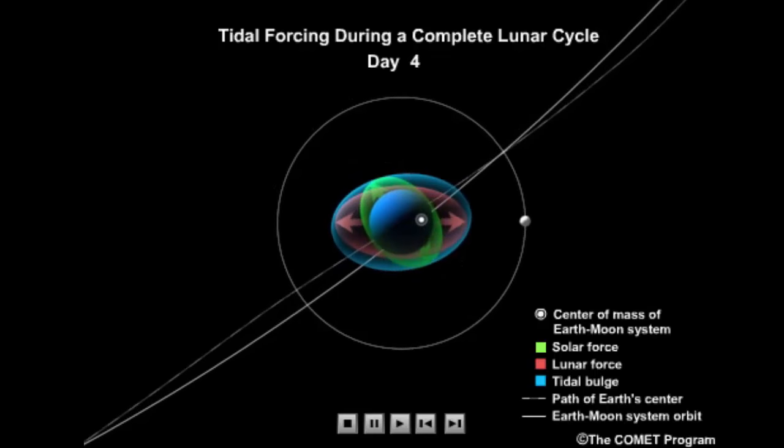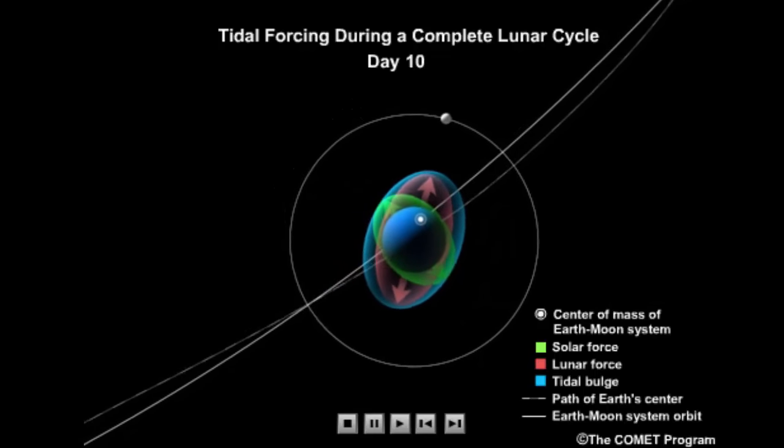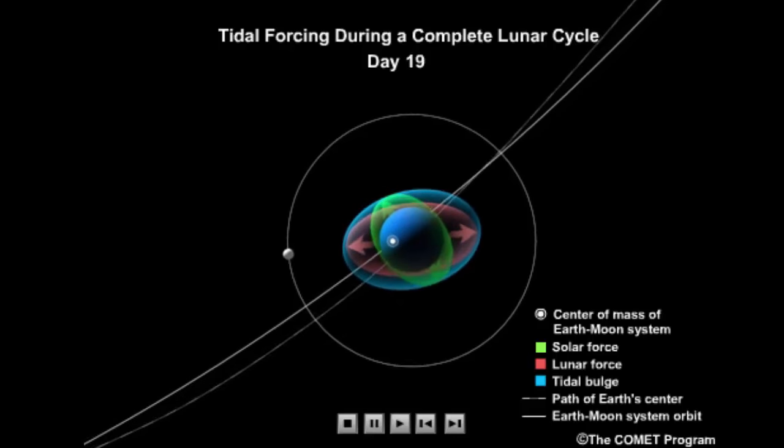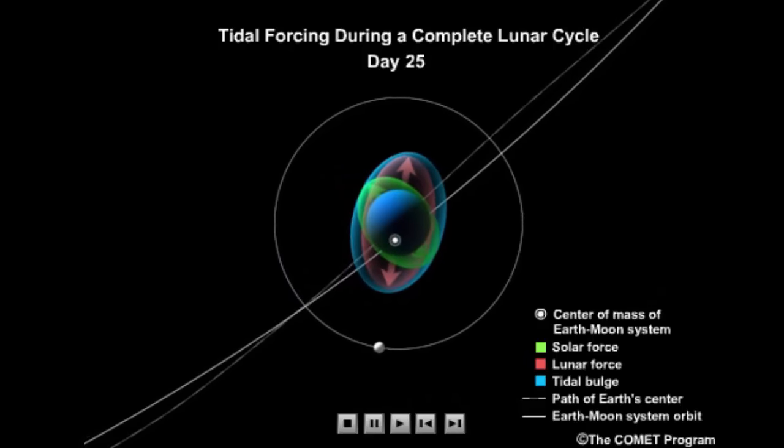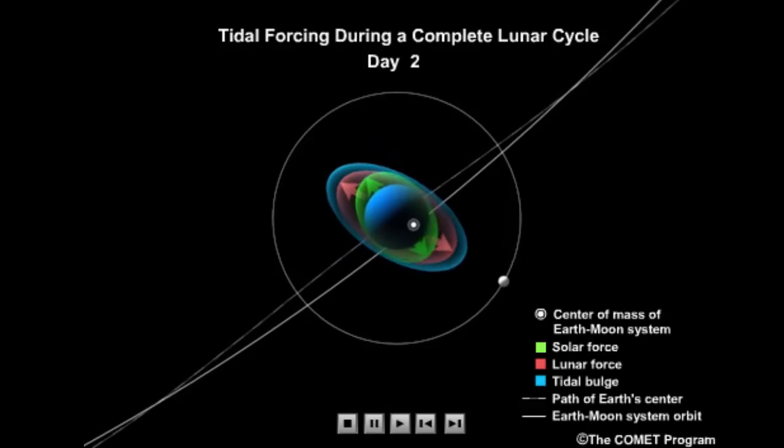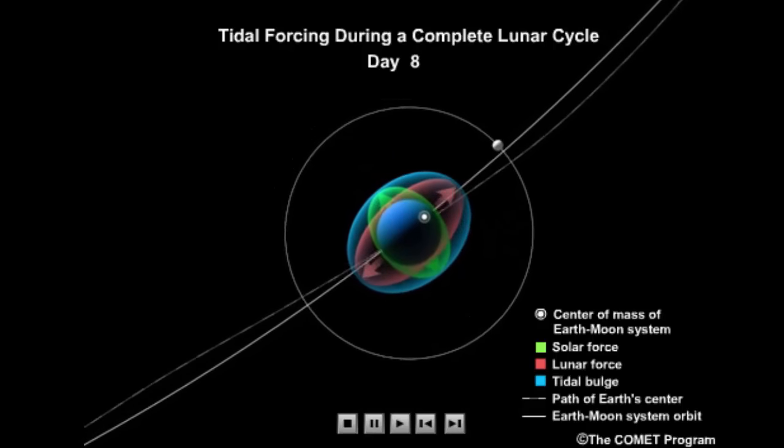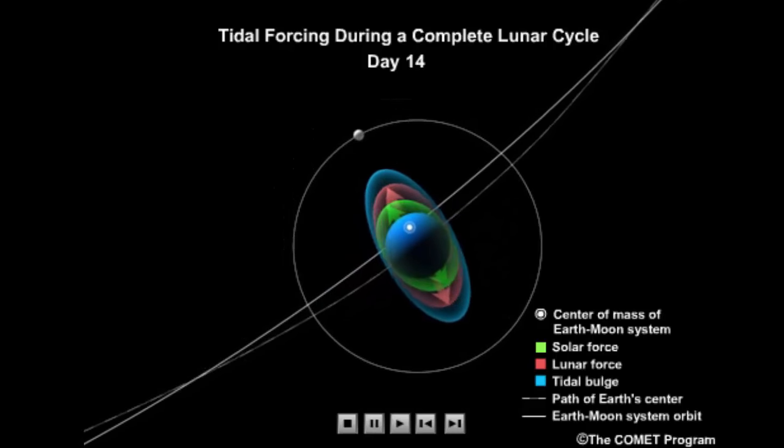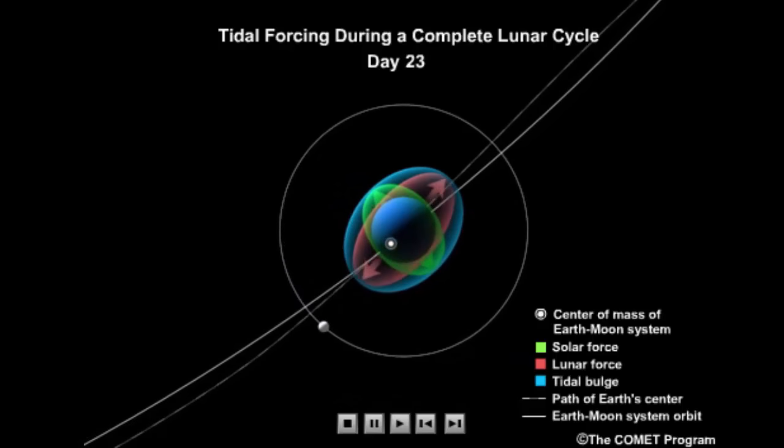Now we can combine the lunar bulge model of tides with the concepts of constructive and destructive wave interference as discussed in the Waves video tutorials to explain the periodicity of spring and neap tides. The lunar and solar bulges are continually interfering with each other.